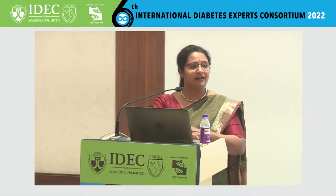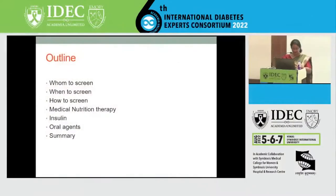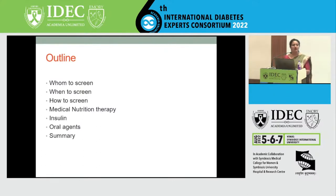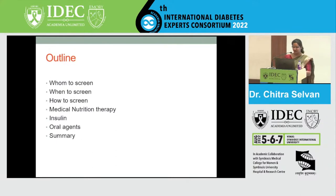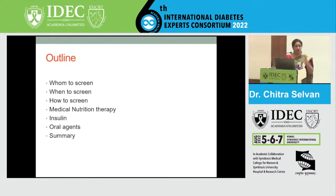So any ideas or guesses? Whom do we screen? Do we screen all people, all pregnant women, or pregnant women who are beyond a certain age, anybody with a risk factor, past history, PCOS? Although universal screening of GDM is what is to be done.